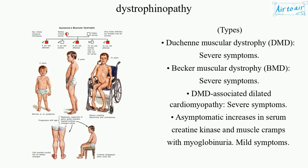Types: Duchenne muscular dystrophy (DMD) — severe symptoms. Becker muscular dystrophy (BMD) — severe symptoms. DMD-associated dilated cardiomyopathy — severe symptoms. Symptomatic and asymptomatic increases in serum creatine kinase and muscle cramps with myoglobinuria — mild symptoms.